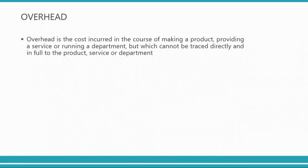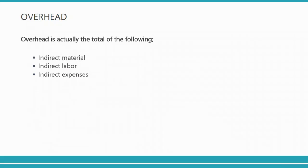An overhead is a cost incurred in the course of making a product, providing a service, or running a department, but which cannot be traced directly and in full to the product, service, or department. It is a cost you have incurred but cannot fairly or easily measure within the unit of output. Overhead is actually the total of indirect material, indirect labor, and indirect expenses — for example, indirect material could be glue, indirect labor could be a supervisor's salary.